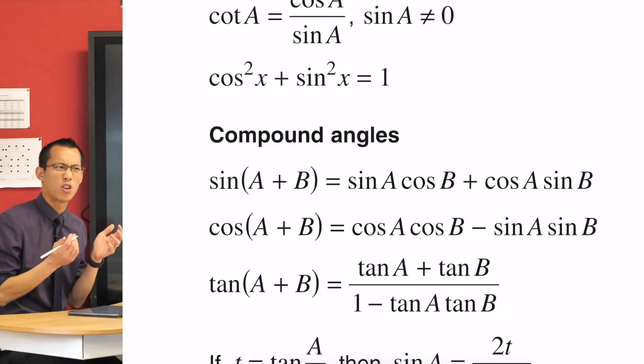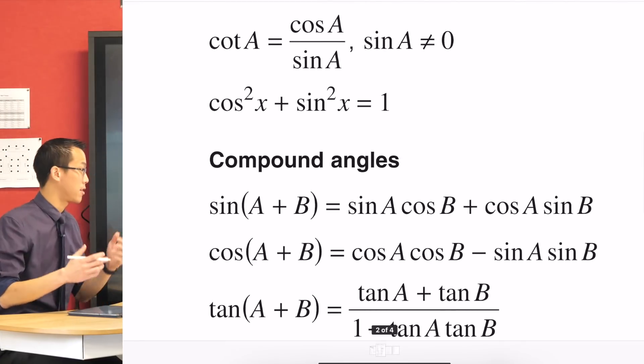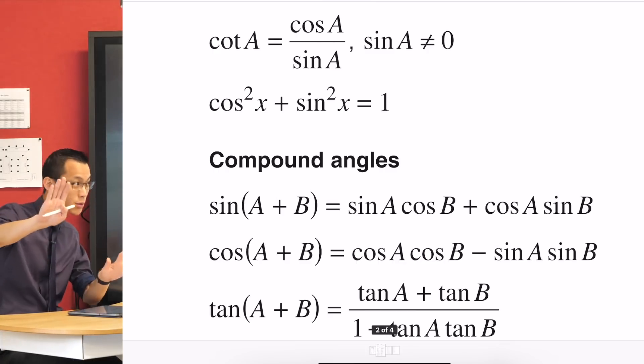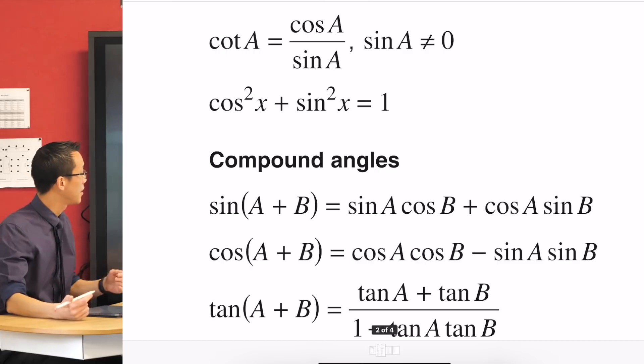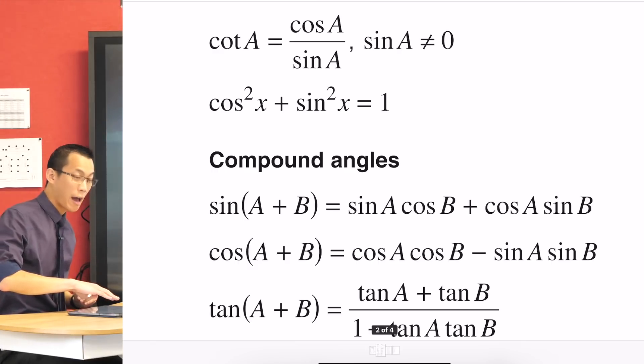You can see right down the bottom, cos squared x plus sine squared x equals one. This has a name, by the way, does anyone know what it's called? It's called the Pythagorean identity, because if you've got a right-angled triangle, its sides can be sine, cosine, and one in the unit circle. So this is literally Pythagoras, a squared plus b squared equals c squared, but with trig.